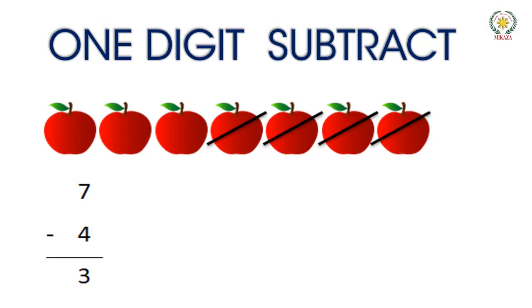Seven minus four. We have seven apples. We have four minus. So what is our answer? Three. We have seven apples, four minus apples, so our answer is three. Seven minus four equals three.